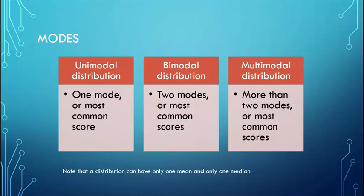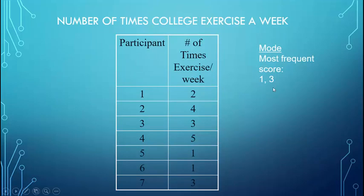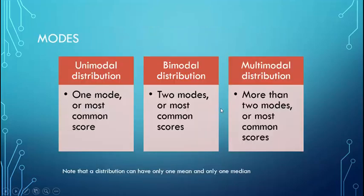It's possible to have more than one mode in a distribution because it's just the most common score. If we have a unimodal distribution, that means there's only one mode. A bimodal distribution means there are two modes — that's what we just saw. There can be more than two modes; we call those multimodal distributions. Importantly, any distribution can only have one mean and one median, but they can have multiple modes.